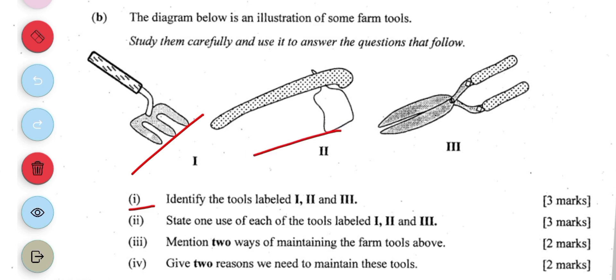The second one is a hoe. The third one is a shears or a pair of shears. State one use of each of the tools. The hand fork is used for digging the soil. It's also used for tending compost.